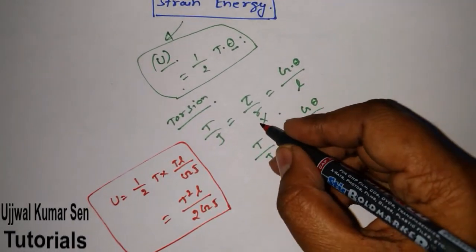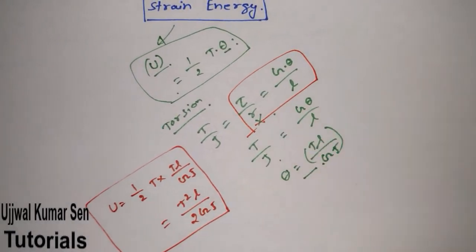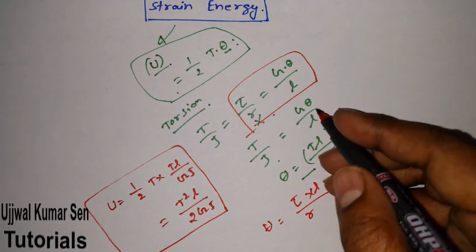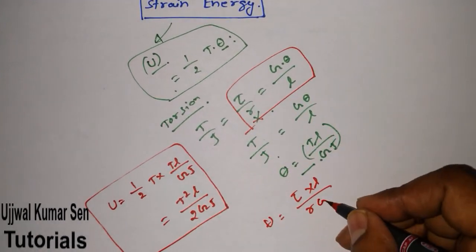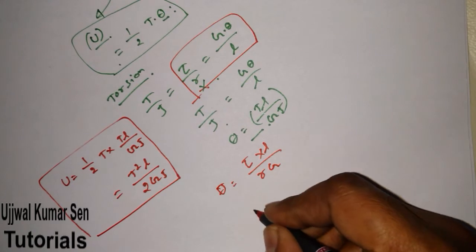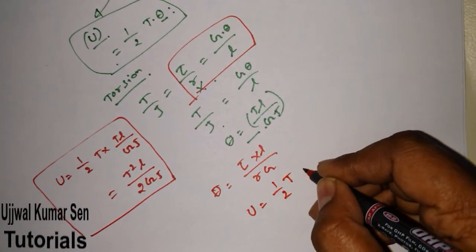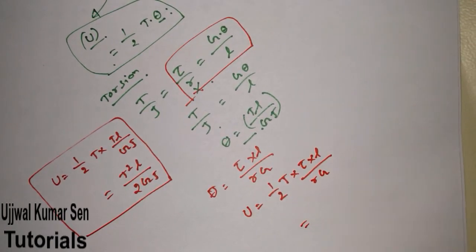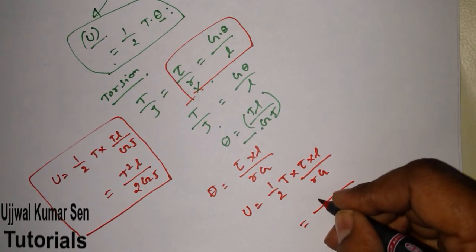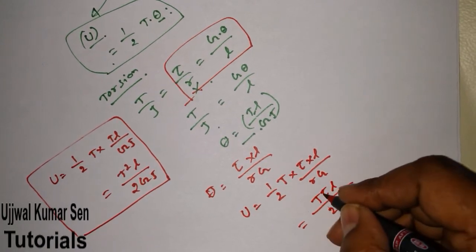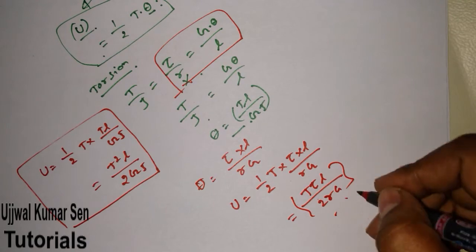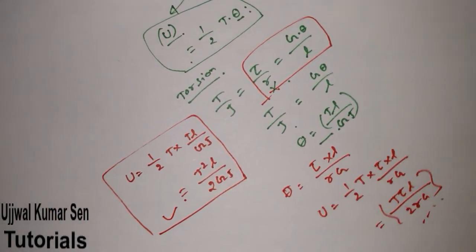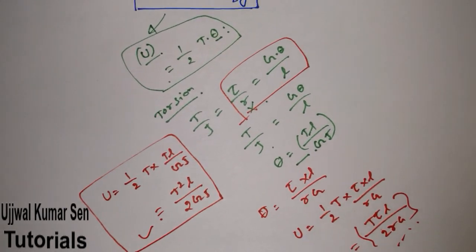You can also relate strain energy with shear stress. Using the relation theta = τL/rG, we can write U = ½T × (τL/rG), which gives U = Tτl / 2rG. However, the most popular and useful formula is U = T²L / 2GJ, and that is what we will use to solve the numerical problem.